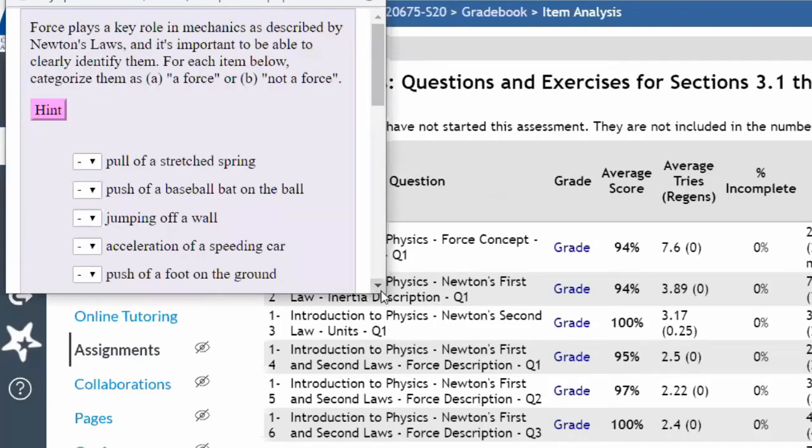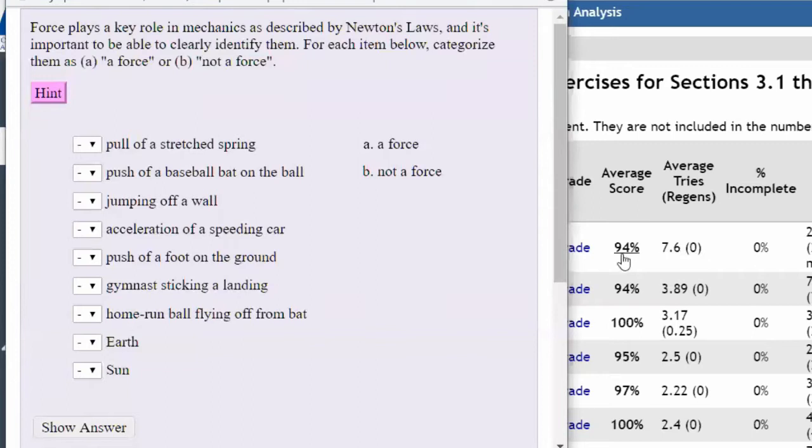I don't think I've ever covered this, and looking at the question type, I can understand why there are so many tries. It's a matching question with a lot of possibilities, so sometimes you go through it, get some right, get some wrong, and try it again. I can imagine someone easily doing ten different tries to get everything right.